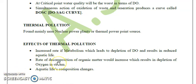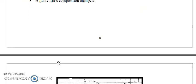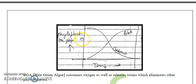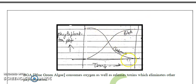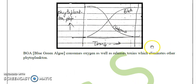The third effect is a change in the composition of aquatic life. Looking at the graph with temperature on the x-axis and phytoplankton population on the y-axis: blue-green algae population increases with temperature, as some blue-green algae are tolerant of high temperatures. Diatom population, on the other hand, declines with increasing temperature. Blue-green algae release toxins such as saxitoxin, which may cause the death of other phytoplankton, and they also consume oxygen, depleting the oxygen content of the stream.